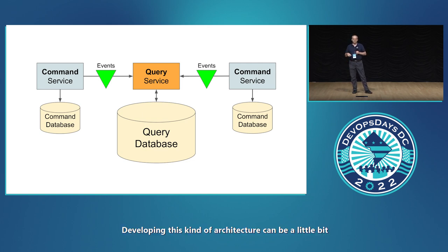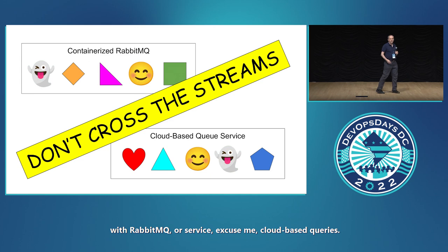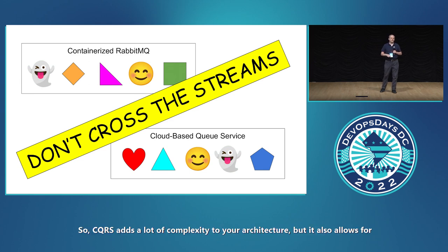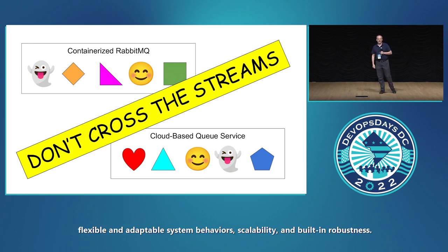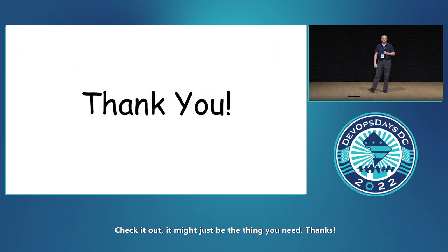Developing this kind of architecture can be a little bit of a challenge, but you can use containers running locally with RabbitMQ or cloud-based queues. Just remember to isolate one developer's messages from another developer's. CQRS adds a lot of complexity to your architecture, but it also allows for flexible and adaptable system behaviors, scalability, and built-in robustness. Check it out — it might just be the thing you need. Thanks.